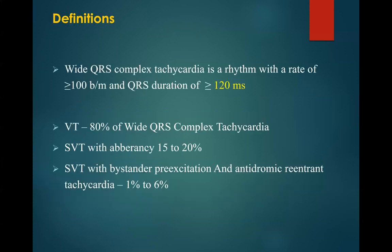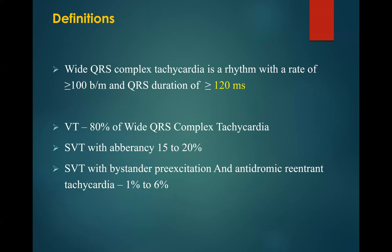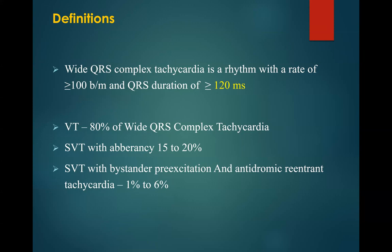By definition, wide complex tachycardia is a rhythm with a rate of at least 100 beats per minute and a QRS duration above 120 milliseconds. Ventricular tachycardia occurs in about 80% of wide complex tachycardias, while supraventricular tachycardia without aberrancy accounts for about 15–20%, and SVT with bystander pre-excitation and antidromic re-entrant tachycardia accounts for about 1–6%.